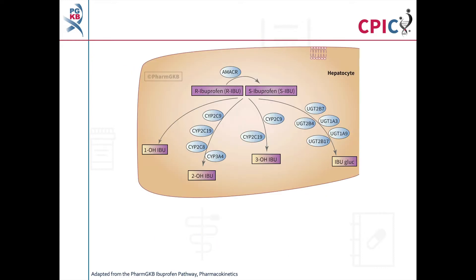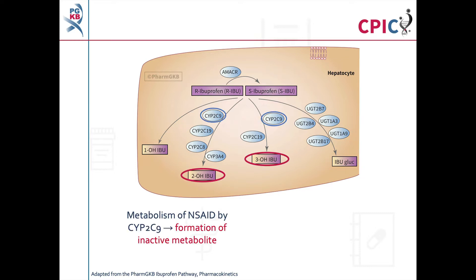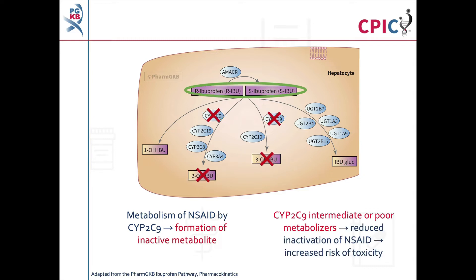This image is adapted from the PharmGKB ibuprofen pathway; a link to the original pathway is provided in the description below this video. NSAIDs are converted to inactive metabolites in the liver, and this metabolism is predominantly carried out by CYP2C9. In patients with reduced CYP2C9 function, NSAID metabolism is decreased, which increases the concentration of active drug in the body and puts the patient at an increased risk of toxicity.